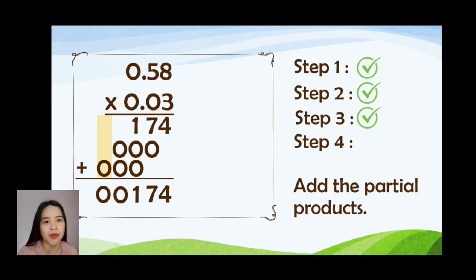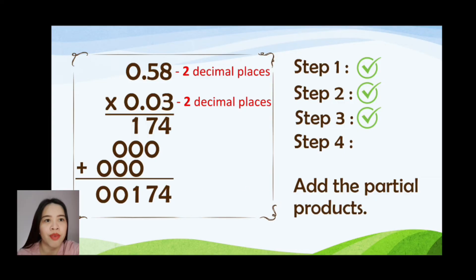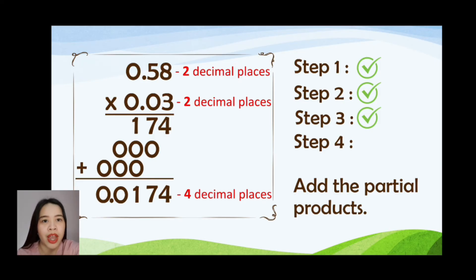To write the decimal point on your answer, we are going to count the decimal places on the numbers that we have multiplied. In 0.58, we have 2 decimal places. And in 0.03, we have 2 decimal places. We are going to add up the decimal places from the numbers that we have multiplied. Therefore, we should have 4 decimal places. To count the number of decimal places on your answer, you are going to start on the right number, which is 4, and count 4 decimal places from number 4 and write the decimal point.